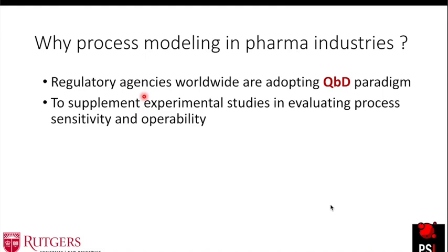Right now, because pharma regulatory agents are really stringent, you cannot just use any process model — you need to get approvals at many levels. Currently, process modeling is used mainly to supplement experimental studies, assess the design space, and do feasibility analysis. It also helps in identifying critical process parameters — the input parameters that most impact your output. For example, there are process parameters that impact the dissolution of the tablet the most. Identifying those critical parameters is also where process modeling comes in.